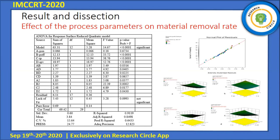In the 3D response surface plots, figure A shows peak current versus pulse off time. When peak current increases, material removal rate increases. When pulse off time increases, material removal rate decreases. Figure B shows spark gap voltage versus peak current. When spark gap voltage increases, material removal rate increases. Similarly, when peak current increases, material removal rate also increases.